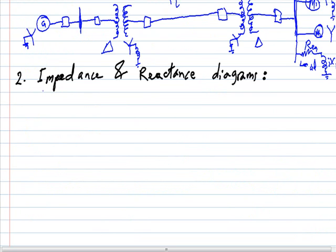The next topic is the impedance and reactance diagram. The one-line diagram does not provide concise information about the system; the performance of the system under load conditions or under a short circuit cannot be directly calculated using the one-line diagram. Thus it is necessary to obtain an equivalent circuit of the system for the purpose of analysis. The impedance and reactance diagram should contain the equivalent circuit of each component so that we can apply electrical rules and laws to analyze the circuit.